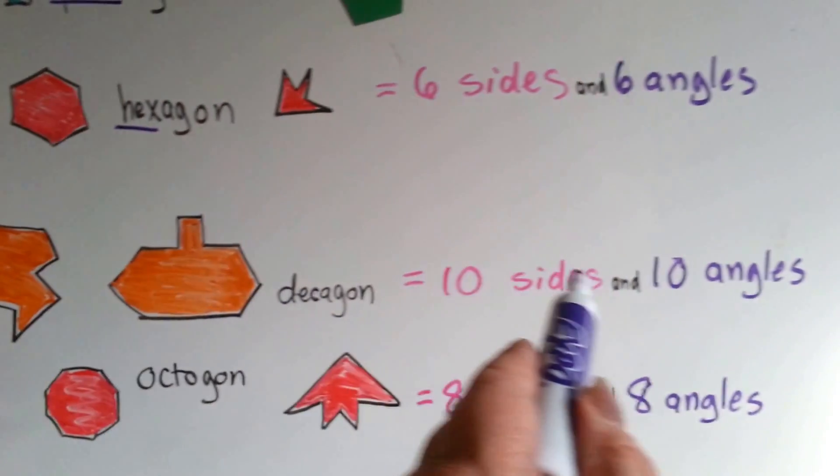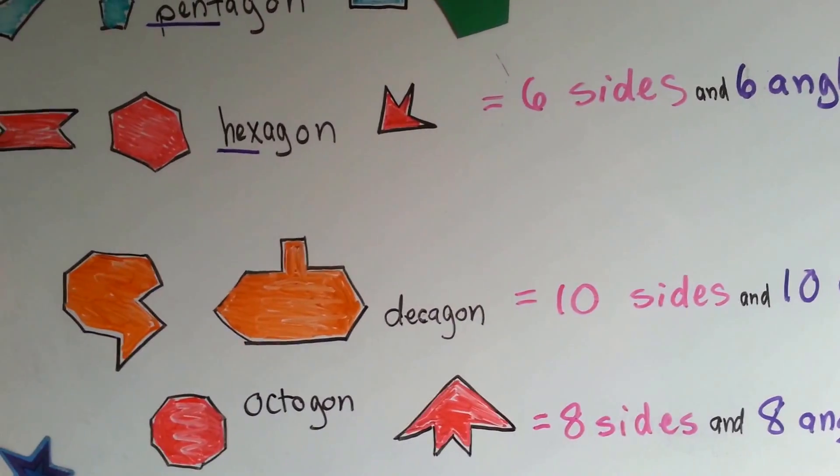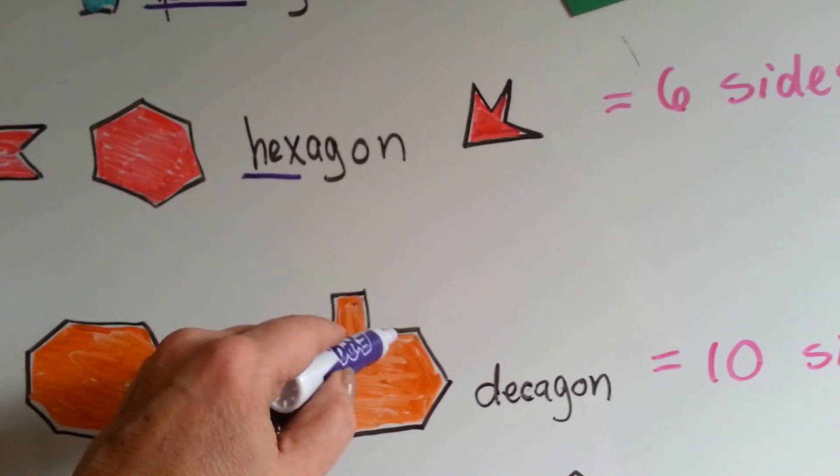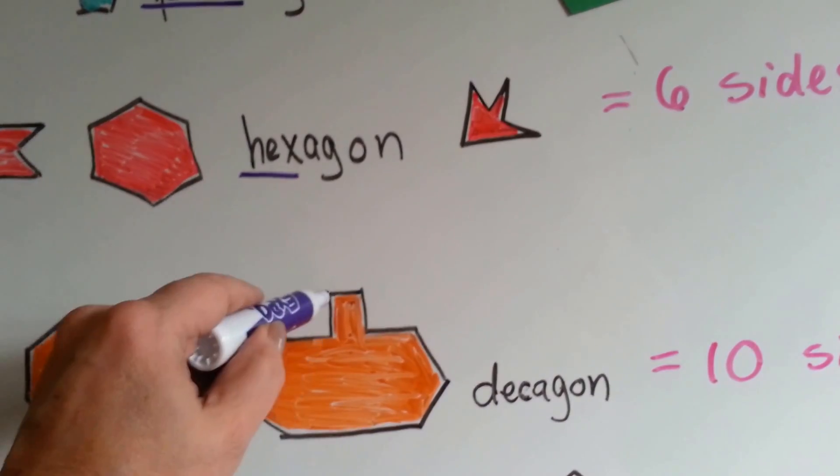A decagon has ten sides and ten angles. That kind of looks like a perfume bottle, doesn't it? So ten sides and ten angles. One, two, three, four, five, six, seven, eight, nine, ten sides.